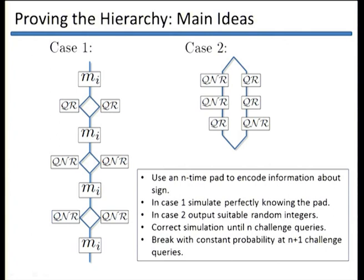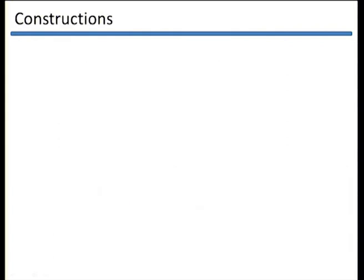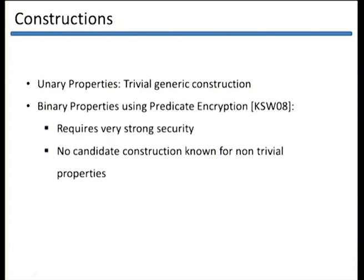For unary properties, there is a trivial generic construction: just include the property P in the ciphertext. For binary properties, there is a generic construction using predicate encryption. However, to get left-or-right security requires very strong security guarantees from the predicate encryption scheme, not known to exist for non-trivial properties. Therefore, in our paper we presented an explicit construction for testing orthogonality. For ternary properties and above, it remains an open problem.